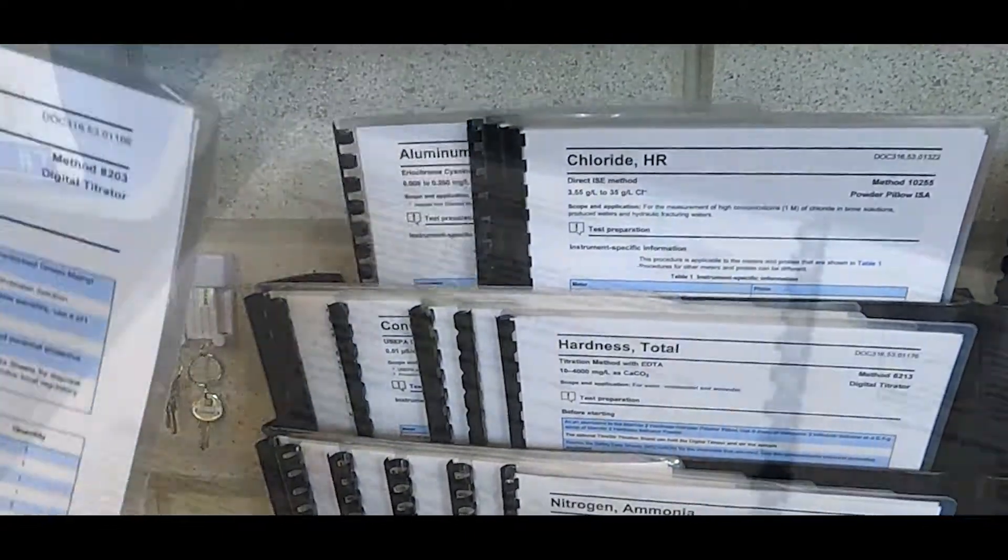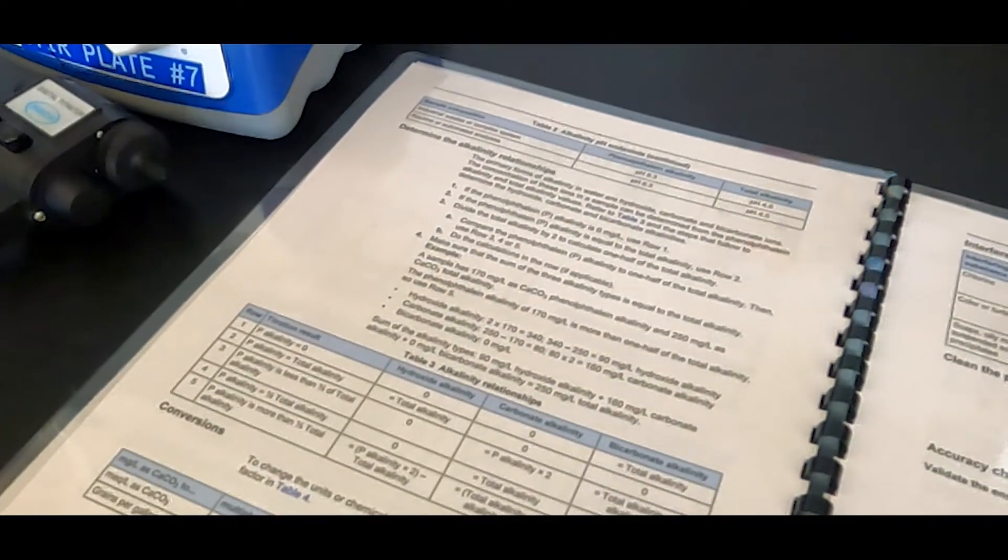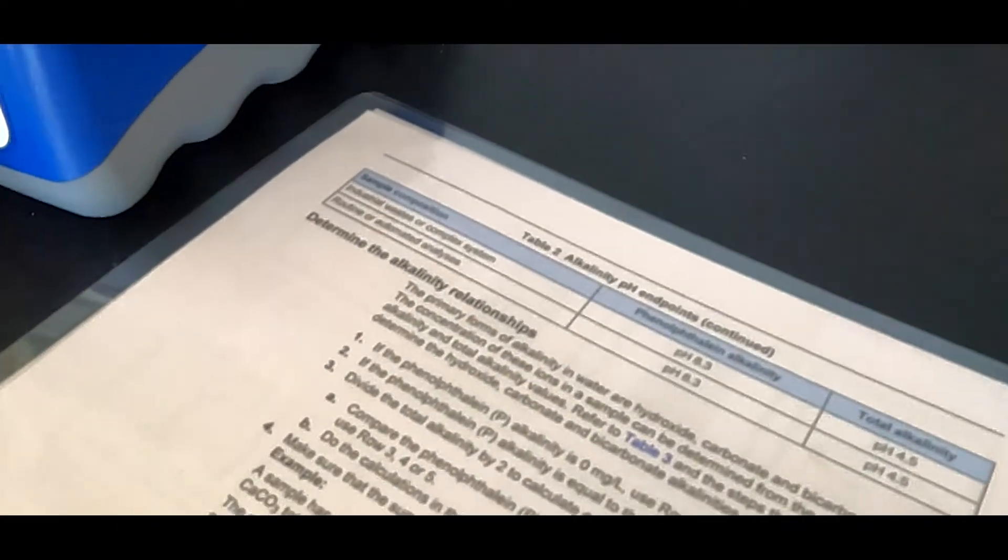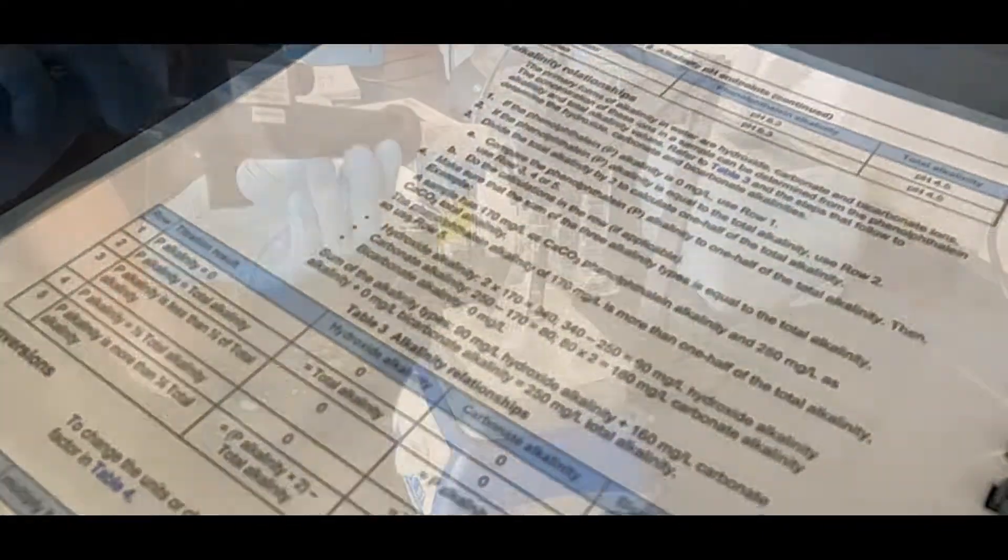Information for determining the alkalinity relationships and calculating the bicarbonate, carbonate, and hydroxide alkalinities can be found in the method if it is required.